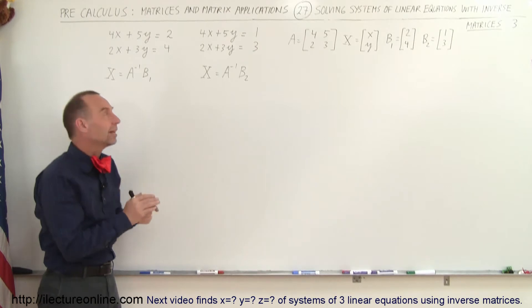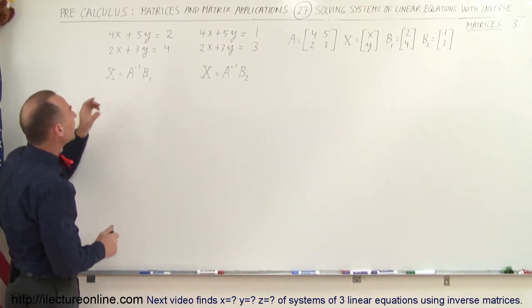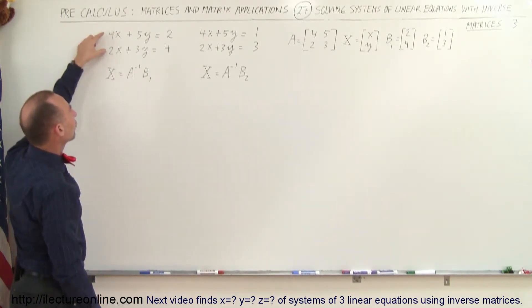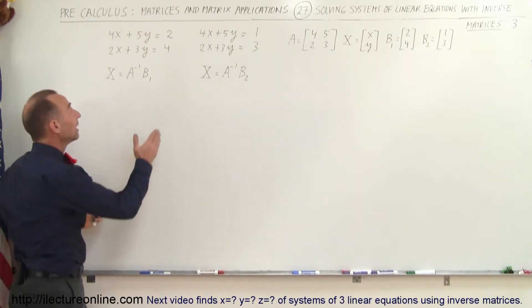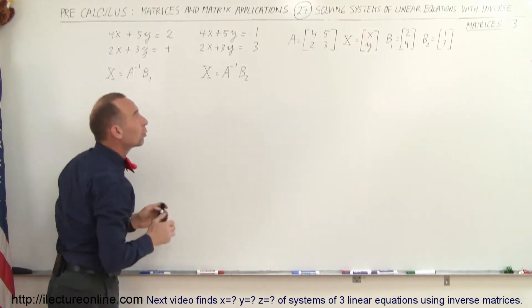And we could have a third and a fourth and a fifth set and notice the similarities. In each set the coefficients in front of the x and y variables are exactly the same. The only thing that changes is the numbers on the right side of the equations.